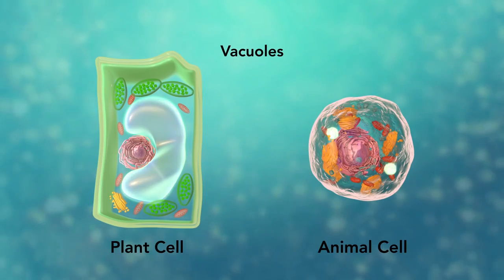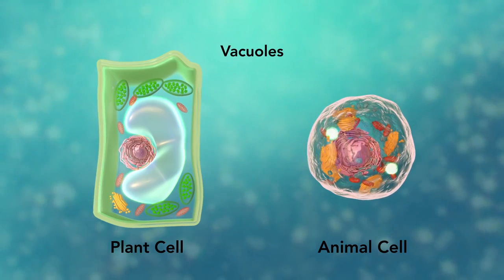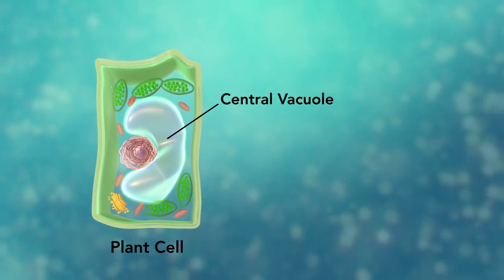Vacuoles are sac-like structures that store different materials. Here in this plant cell, the central vacuole stores water.